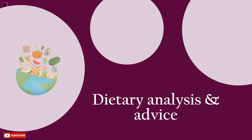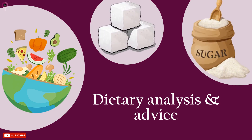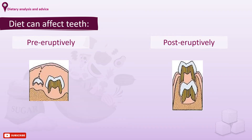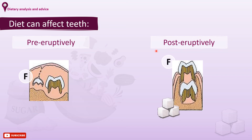Now to the last part: how to analyse the dietary habits of your patients and the advice that can be given accordingly. Diet can affect teeth at different stages. In the pre-eruptive stage, fluoride is the most important element in tooth development; the effect of calcium, phosphate, vitamins, and sugar is unclear and unlikely to be great. In the post-eruptive stage, fluoride remains the most important, but sugar is now equally important — it can have a significant effect on teeth, and acidic foods or drinks can cause erosion.